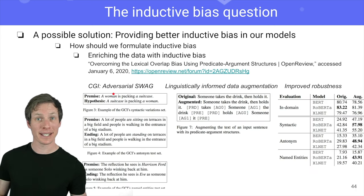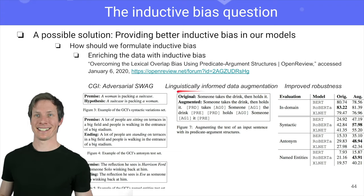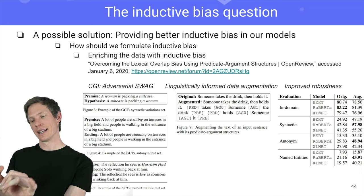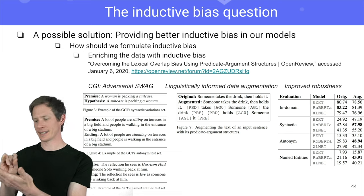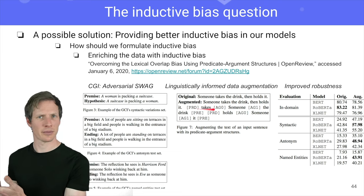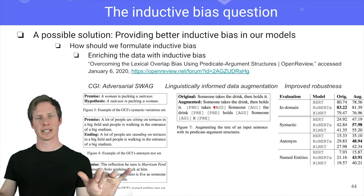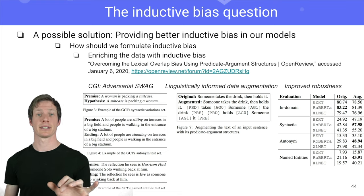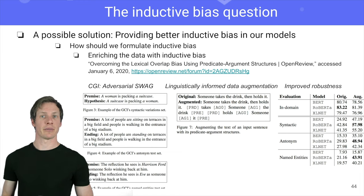Another way is to try to add inductive bias in the training data. Here is one interesting example — an anonymous paper on OpenReview. They try to help BERT by providing, after the training sample for BERT, a form of semantic role labeling. So they say: this word is a predicate, this word is the first argument. They add this semantic role labeling information after the training, so it just forms part of the input for the model. Then at test time, you just don't use this augmented data. And you see that the model actually gets improved robustness by being trained with this information.